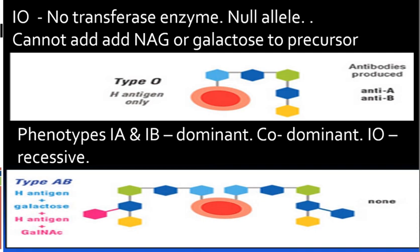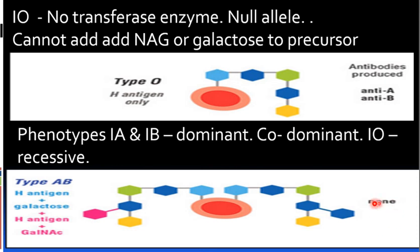In the AB blood group, both A and B antigens are present. The AB blood group contains both anti-A and anti-B antibodies absent in the serum, which is why AB is called the universal recipient.